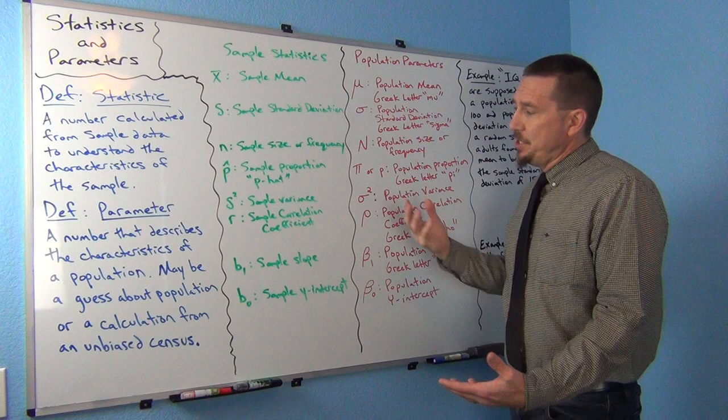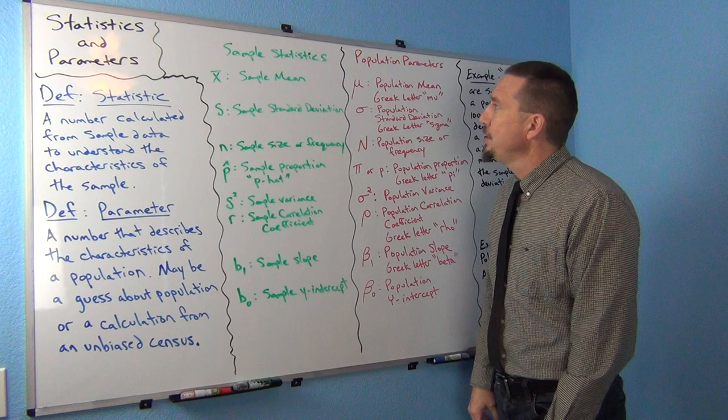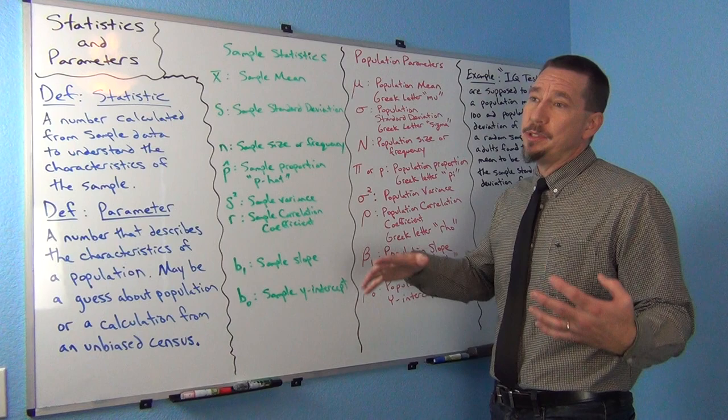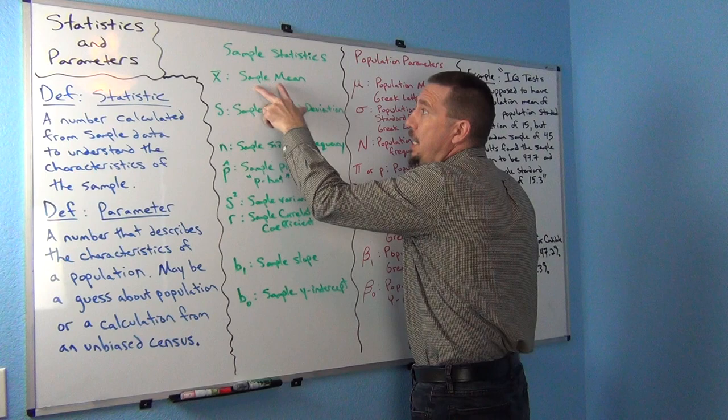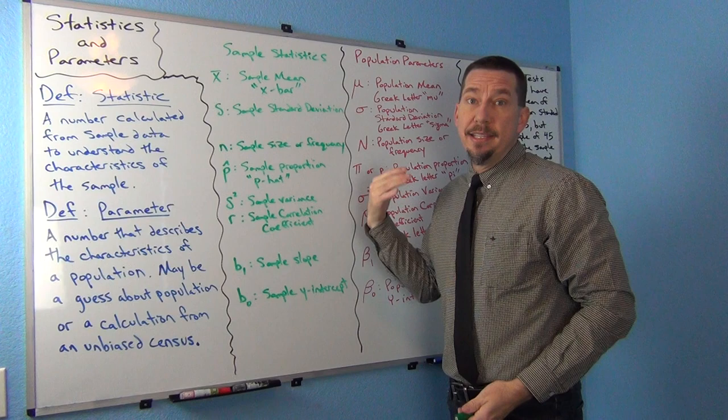Let's look at some of these famous letters. This is almost like a famous-letter lecture, because you'll see these letters later in all the advanced formulas and computer programs. We've already seen that the sample mean is noted as x-bar — x with a bar over it — denoting the mean average of some sample data.